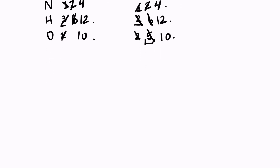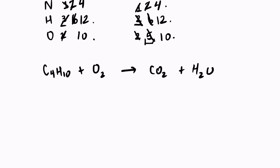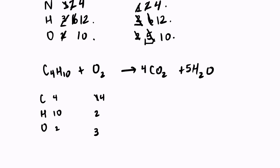Let's try another harder one. We have C₄H₁₀ plus O₂ yields CO₂ plus H₂O — a typical combustion reaction. We can start by counting: I have 4, 10, 2, 1, 2, and 3. My first instinct would be to fix my carbon, so I'd put a 4 here and a 5 here so that I have 4 carbons and 10 hydrogens on the right-hand side right off the bat.